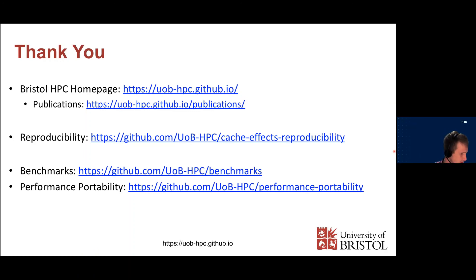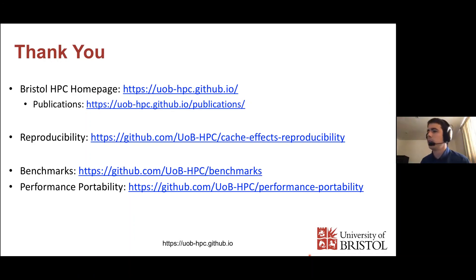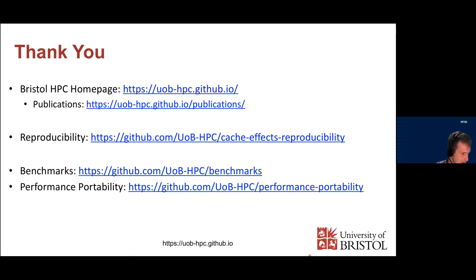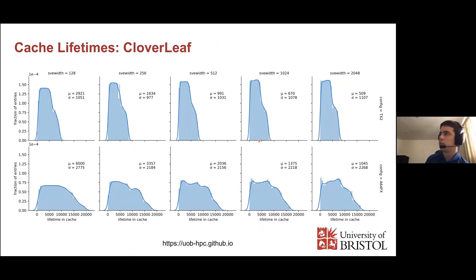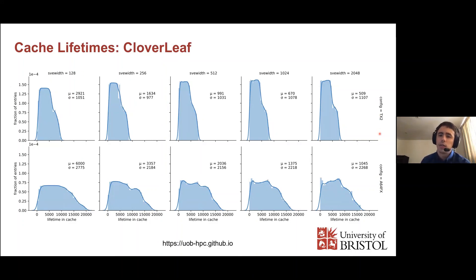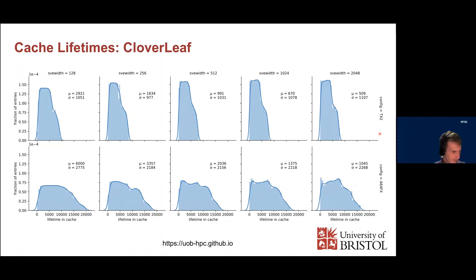Q&A: Why does increasing the L2 set size increase misses for Cloverleaf? The answer is that for those experiments the overall cache size was fixed. Regarding cache lifetimes, what is the size of each cache line? Those experiments used the actual hardware configurations: 64 bytes per cache line for ThunderX2 and 256 bytes for A64FX.